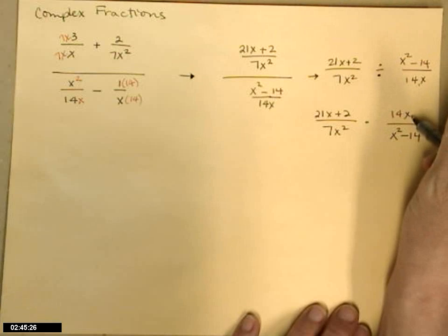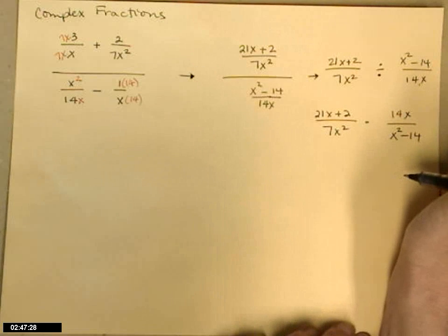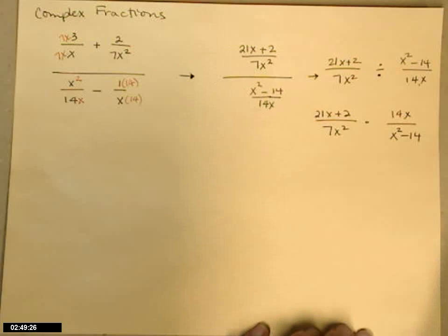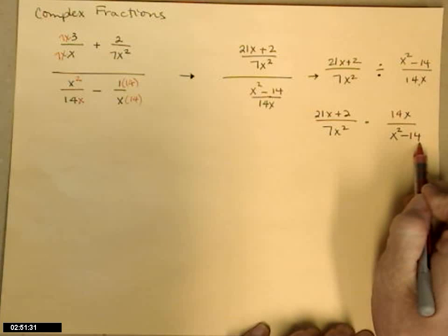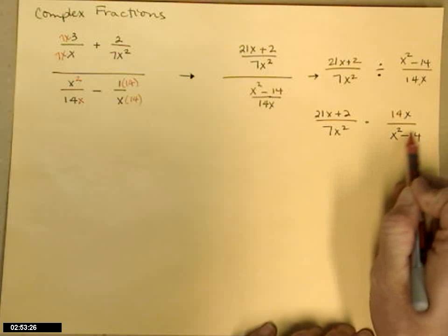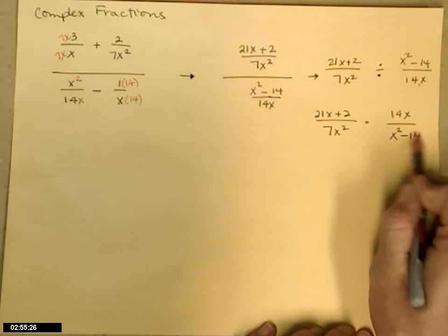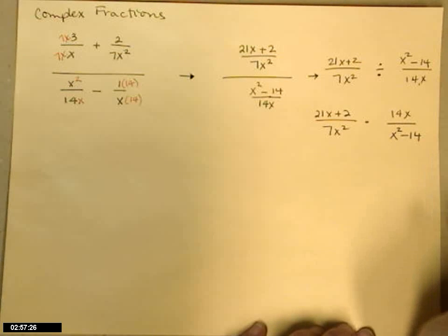Now when I'm multiplying, I look from top to bottom on either fraction to see if there's anything common. x squared minus 14, that's not going to factor. It could be difference of squares, but 14 isn't a perfect square, so I can't do that.